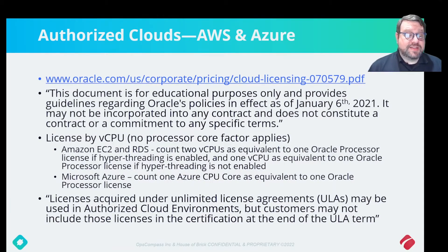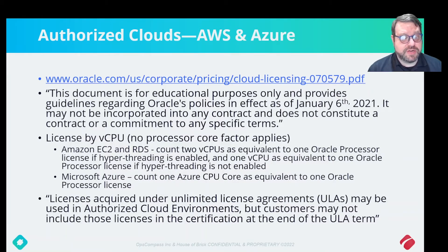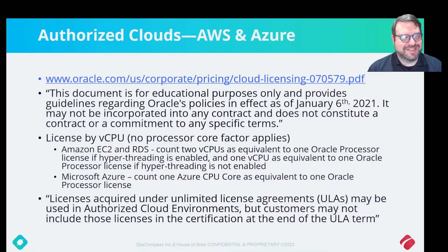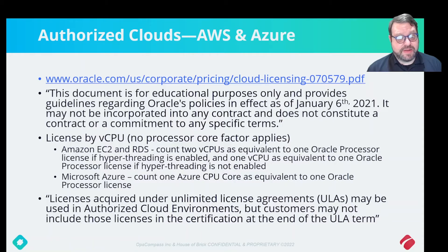Things got a little goofy when we go to the cloud. The most current version of what I call the 'cloud licensing policy' from Oracle — the full name is something about authorized cloud environments — is not a very long document, and it says a bunch of things about how you can license in a public cloud by virtual CPUs. This is the first time Oracle has really offered this, because before everything tied to physical hardware.